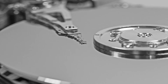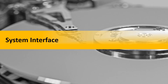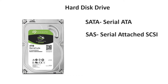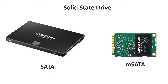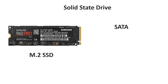Now let's compare these two drives in terms of system interface, which defines how these drives are connected to the system. Earlier hard drives were connected using the PATA (Parallel ATA) interface, but today's hard drives use the SATA interface. Enterprise hard drives are connected using the SAS protocol. For solid state drives, mSATA and SATA SSDs use the SATA interface, while M.2 SSDs can communicate with the system using either SATA or the PCIe (PCI Express) bus.